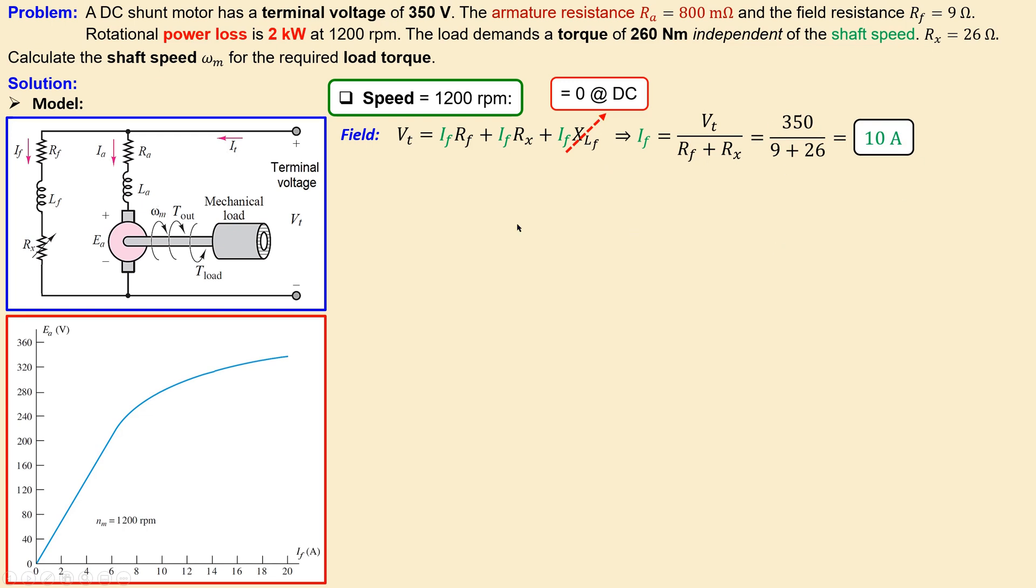Now we can use our magnetization plot. At 10 amperes we have the associated back EMF voltage of 280 volts. This point is necessary to carry out the calculation. From the plot we can say for 10 amperes we have a back EMF for this first condition of 280 volts.